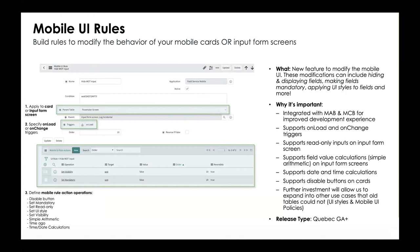Mobile UI rules is what we use to modify the appearance or behaviors of your mobile cards and input form screens. Mobile cards are your mobile view — the header — and input form screens are the action window that pops up for user input. Examples include hiding fields, making fields mandatory or read-only, or applying UI styling conditions. On platform or mobile classic you might use mobile UI policies, but for mobile we use completely different tables, so you need to recreate any policies using mobile UI rules — they don't automatically migrate over.